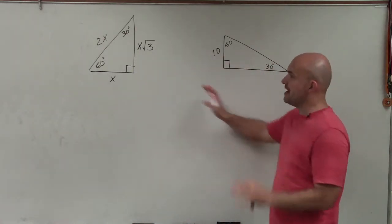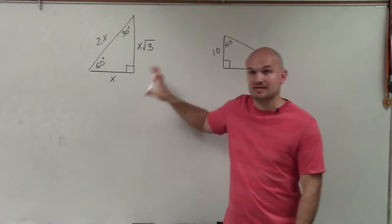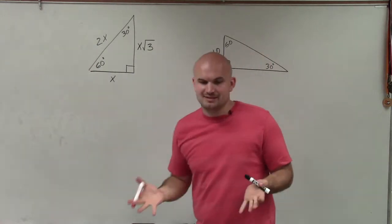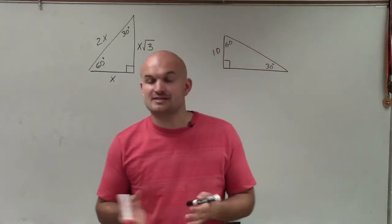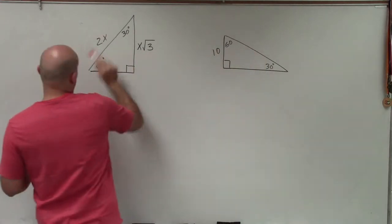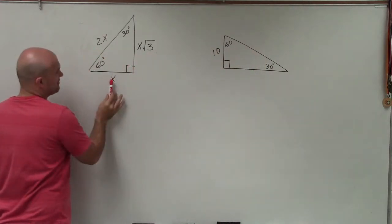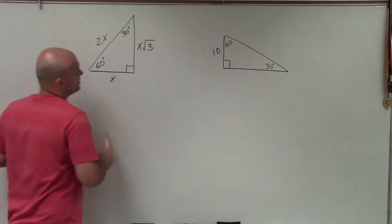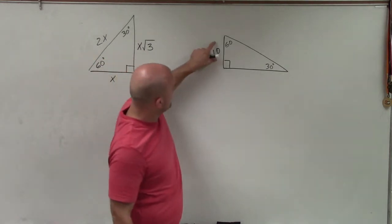I have a diagram up here of how the relationships work. The basic thing to understand with a 30-60-90 triangle is that we have a hypotenuse, which is always directly across from the 90-degree angle, and then we have a short leg and the long leg. You can see in this case we have a short leg.